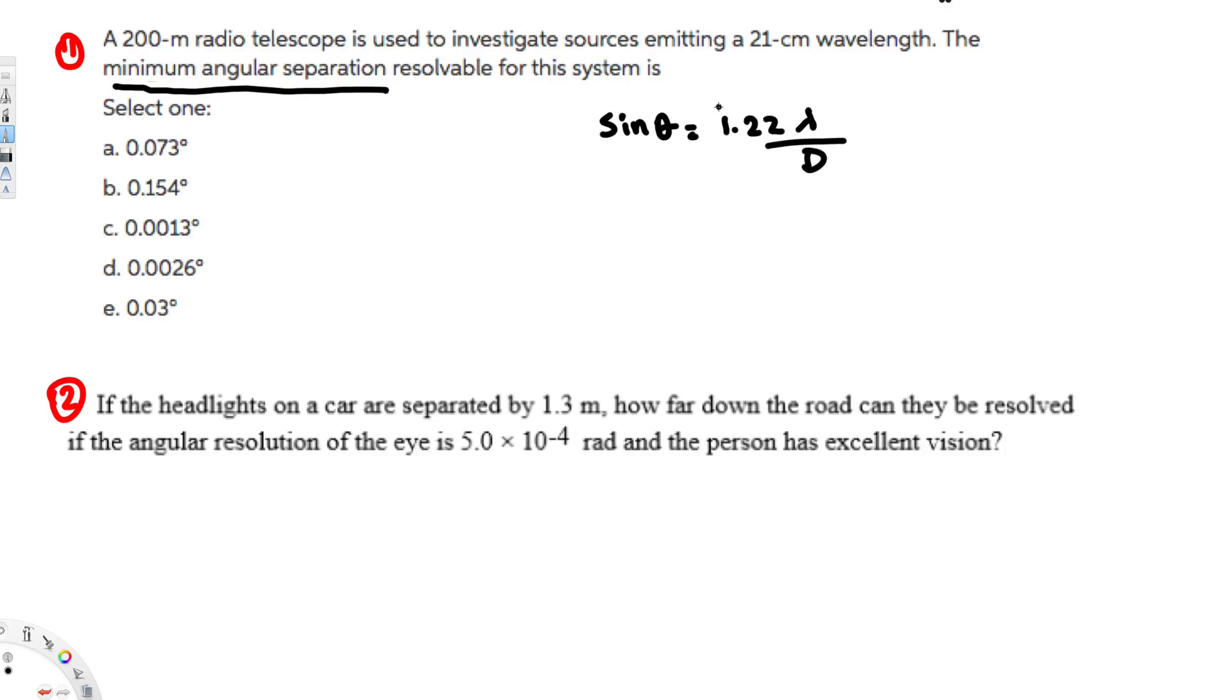Here lambda represents the wavelength and d represents the diameter. This 200 meter is the diameter.